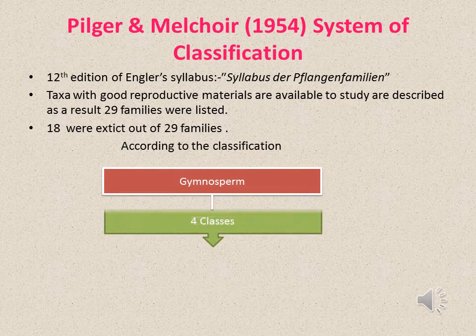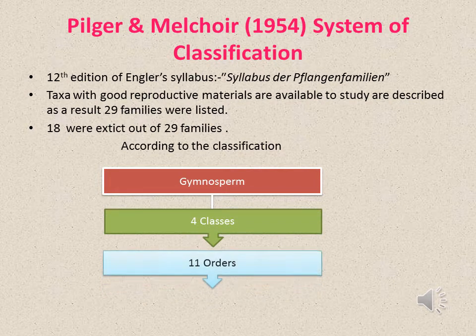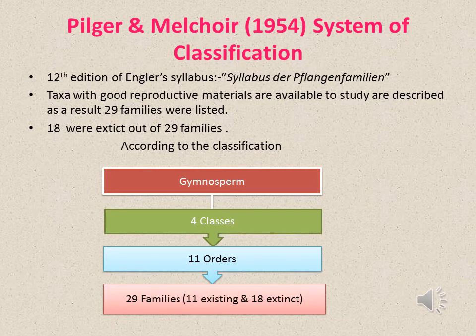Out of 29 families, 18 were extinct. According to the classification, Gymnosperms have 4 classes, 11 orders, and 29 families. Out of these, 11 are living and 18 are extinct.